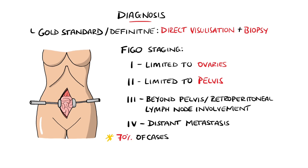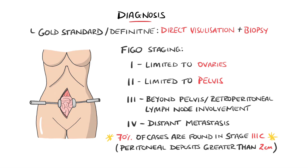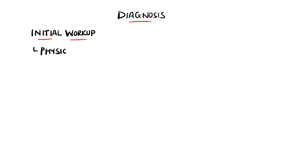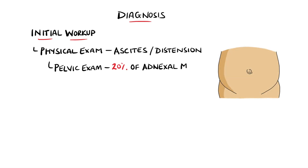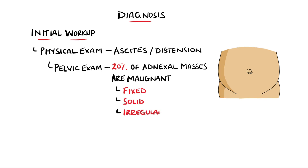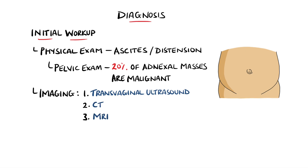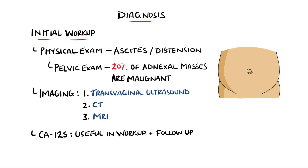Around 70% of ovarian cancers are found in stage 3C, where there are deposits in the peritoneum greater than 2 centimetres in diameter. The workup on initial presentation would involve a physical examination. The general abdominal exam could reveal ascites, and a pelvic exam is done which can reveal an ovarian mass. In 20% of cases these are malignant, and it is more suggestive if the mass is fixed, solid, irregular, or bilateral. Imaging such as transvaginal ultrasound is used, and a subsequent CT or MRI. CA125 levels are also used, which is a marker useful in the workup for an adnexal mass or as follow-up of the condition, but it is not an effective method of screening for ovarian cancer, as it can also be raised in other conditions such as uterine fibroids and endometriosis.